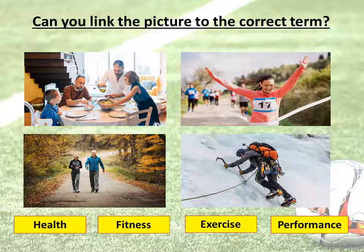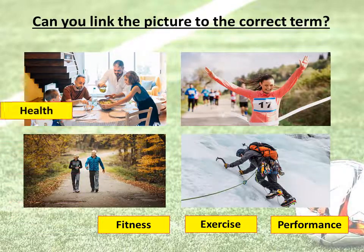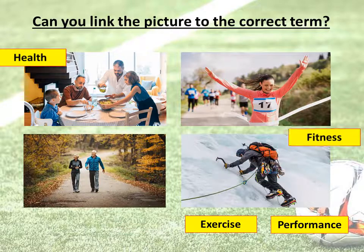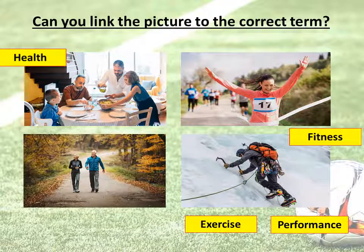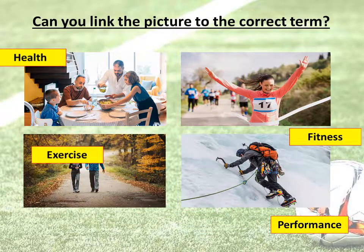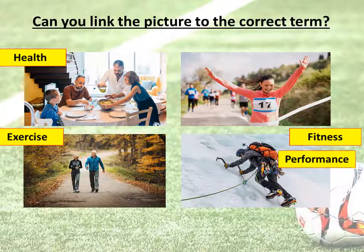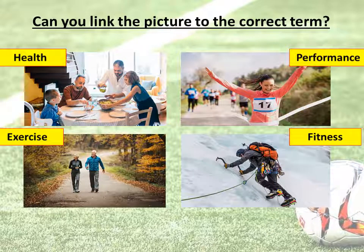Hopefully you've had a go at that and we'll take a look now at which picture attributes to the correct definition. So firstly we have the family up at the top there enjoying a nice meal — that would be closely linked to health. The ice climber attempting to climb up that ice wall would be called fitness. This couple taking a nice leisurely walk in the countryside would be exercise. And the young lady at the top finishing a race would be performance. Now don't worry if you didn't necessarily get those the right way around, because we're going to look at how each one of those pictures closely links to the definition of health, fitness, exercise and performance.